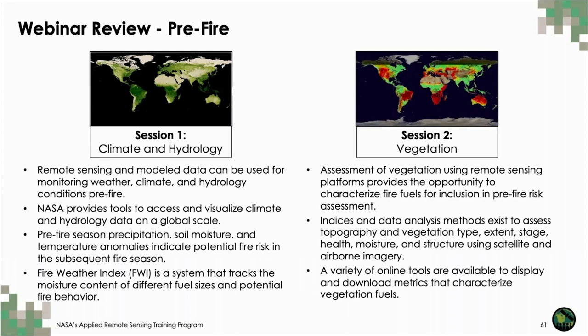Let me go through some main points from each session for a quick series review. In session one, instructors demonstrated how remote sensing and modeled data can be used for monitoring weather, climate, and hydrology conditions at the pre-fire stage, and went over NASA tools to access and visualize this data globally. They covered how to identify precipitation, soil moisture, and temperature anomalies that can indicate fire risk, and the fire weather index for tracking moisture content of different fuel sizes. In session two, we explored many methods of vegetation condition assessment using remote sensing to characterize fire fuels, including vegetation type, extent, stage, health, moisture, and structure.